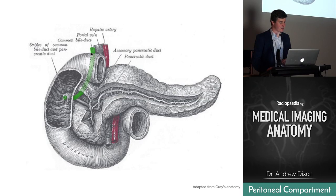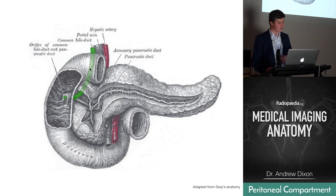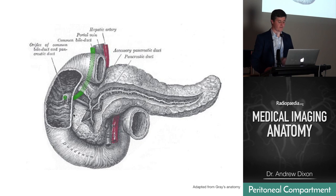The common bile duct runs behind the first part of the duodenum, which is intraperitoneal. It runs behind it, then comes through the pancreatic head to the major duodenal papilla, where the main pancreatic duct also joins it. So we're going to look for this on CT.